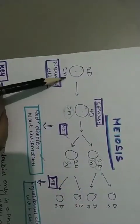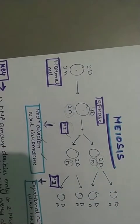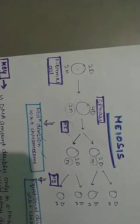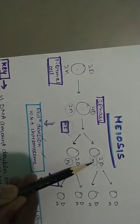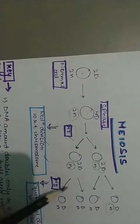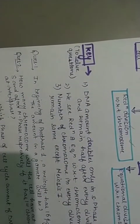Meiosis 1 ke alawa number of chromosome hamesha same rahenge. Like yaha 2n, 2n and 2n. Yaha pe 2n, 2n. Yaha pe kya? Yahan pe n ho ga. Yeh reductional division hai meiosis 1. Meiosis 1 ko chhod ke baaki har division ke andar number of chromosome same rahenge. N se phir yaha pe n kyuki meiosis 2 mein phir same rahe.